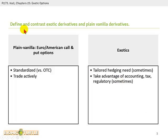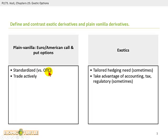We start with defining and contrasting exotic derivatives as compared to plain vanilla derivatives. Most of our study in the FRM on John Hull's options has in fact been around what we would call plain vanilla derivatives — European or American style call or put options — and the essential characteristic of those is that they are standardized, exchange-traded as opposed to over the counter, and they trade actively.